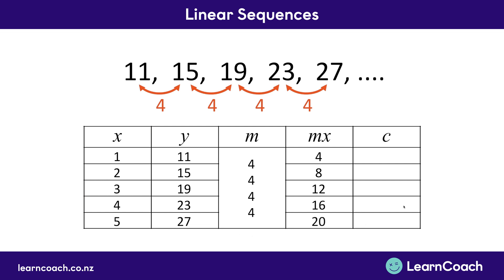The reason we find MX is so we can get to the last column: C. C is the difference between our MX column and our Y column. In our MX column at the top we have 4, and in our Y column we have 11. The difference is 7 — we have to add 7 to our MX to get back to Y. So our C is 7. Checking the rest: 8 plus 7 is 15, 12 plus 7 is 19, 16 plus 7 is 23, and 20 plus 7 is 27.